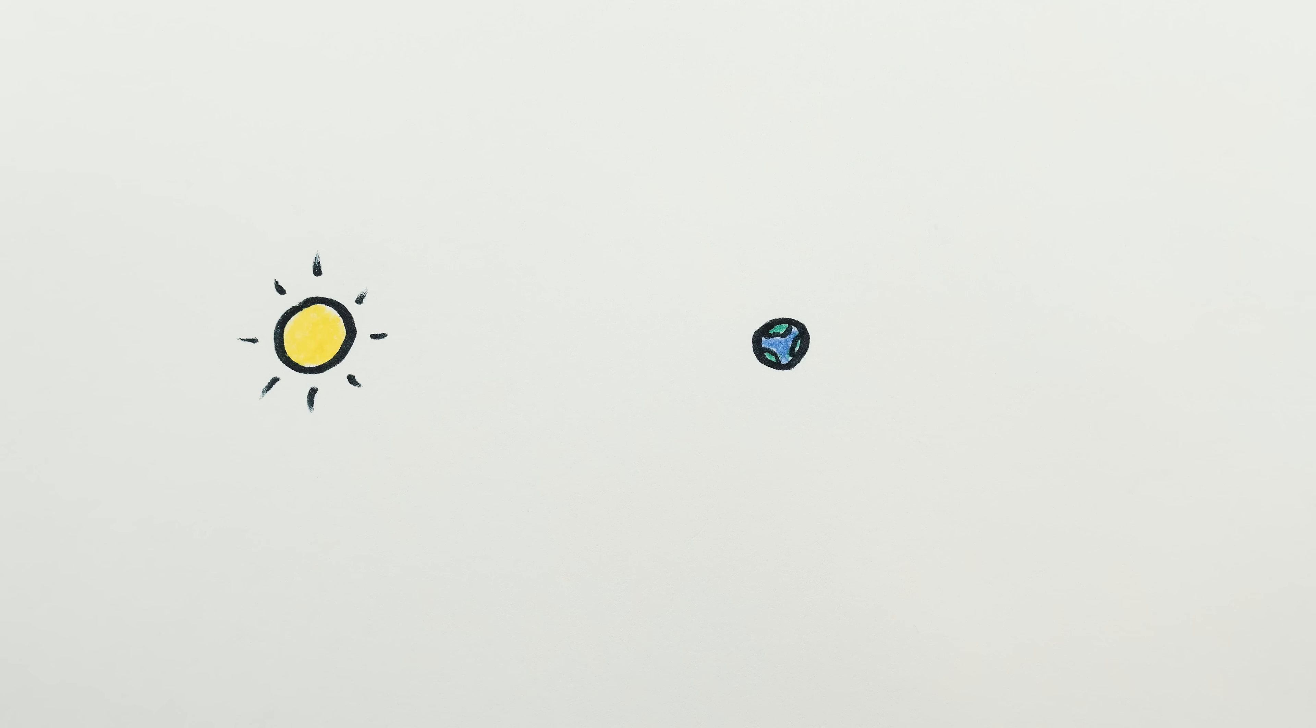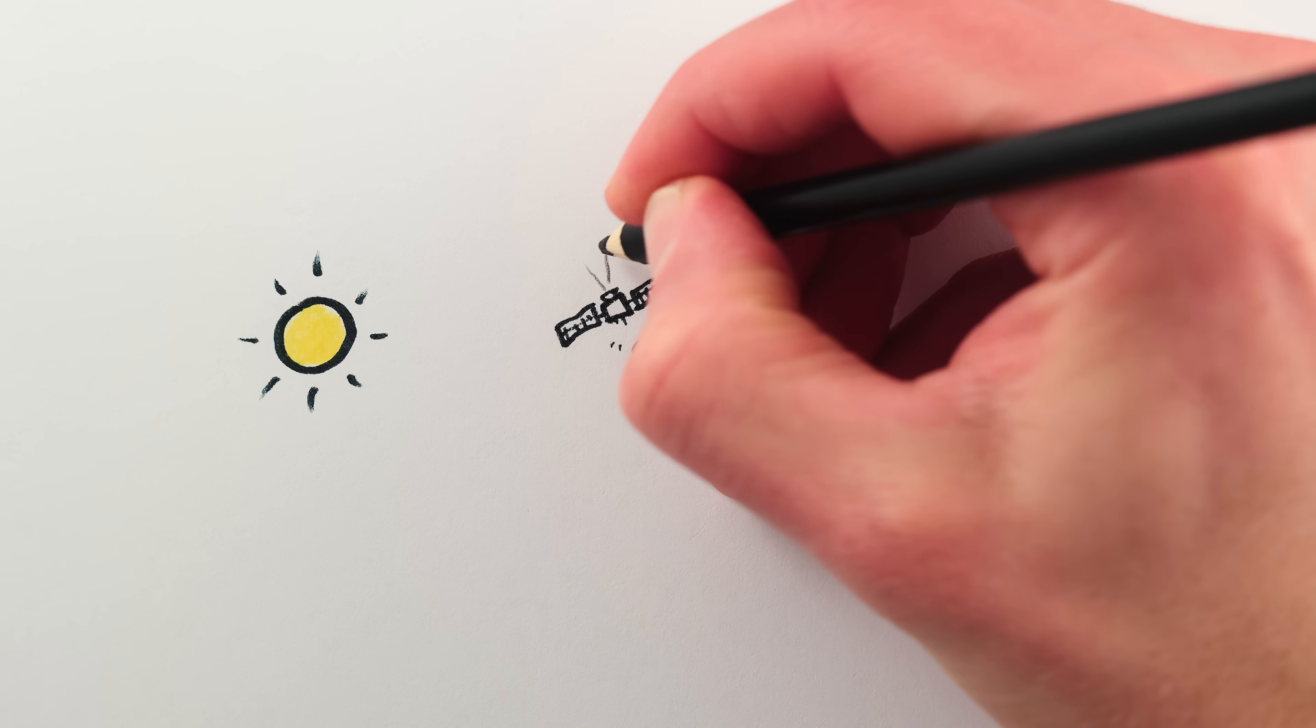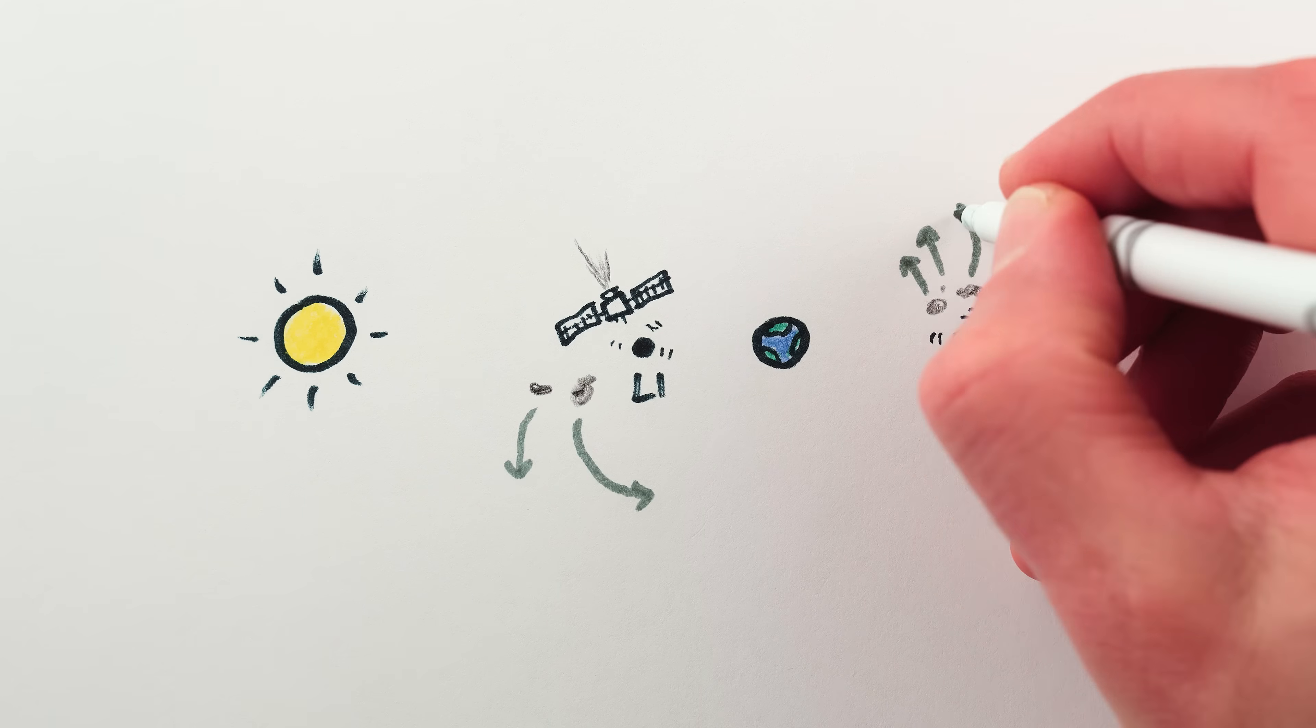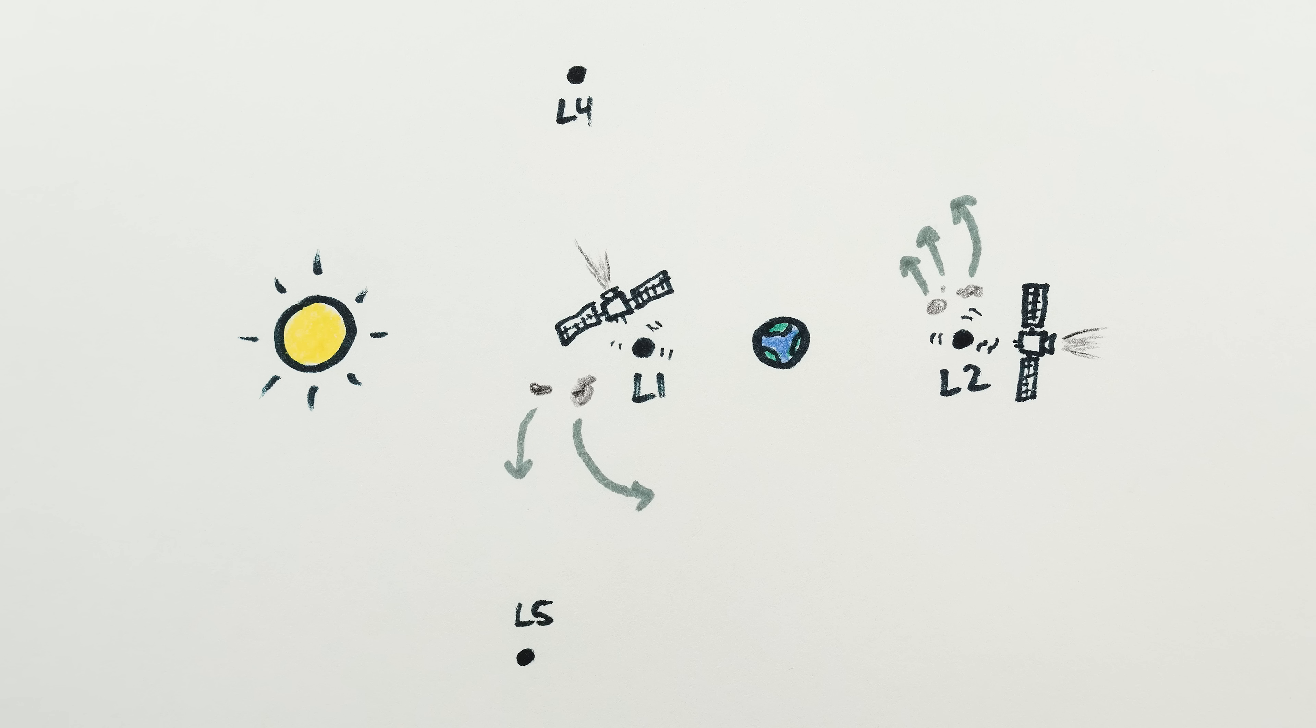Though unstable doesn't mean un-useful. The unstable L1 and L2 Lagrange points around Earth are regularly used for parking spacecraft. The spacecraft do gradually drift away from the Lagrange point, but only enough to need a small correction from a rocket thruster every few months. Asteroids don't have thrusters, so they can only collect at the L4 and L5 points, and only as we've mentioned if the bigger object is more than 25 times the mass of the smaller one.